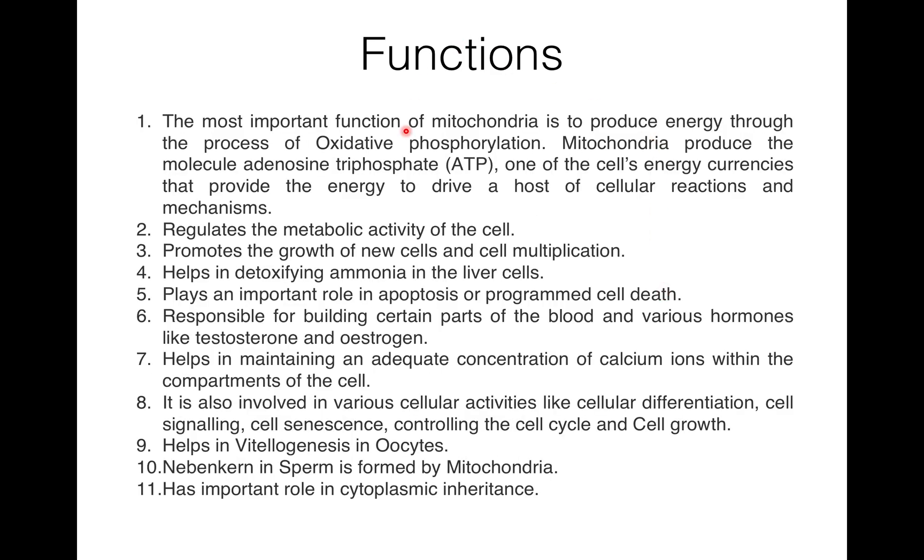Now functions of mitochondria. The most important function is to produce energy through the process of oxidative phosphorylation. It produces the molecule adenosine triphosphate, which is one of the cell's energy currencies, and it provides energy to drive a host of cellular reactions and mechanisms. It is involved in the Krebs cycle, electron transport system, and oxidative phosphorylation. The Krebs cycle involves complete oxidation of acetyl coenzyme A to carbon dioxide and production of reduced coenzymes like FADH2 and NADH plus H+. It involves electron transport system and oxidative phosphorylation where transfer of electrons takes place from reduced coenzymes via a number of electron carriers to oxygen, which results in the production of ATP.